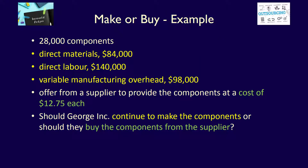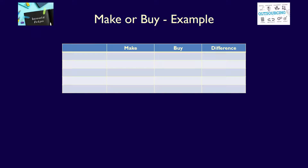We now have all the relevant information: 28,000 components, direct materials $84,000, direct labor $140,000, variable manufacturing overhead $98,000, and the supplier offering $12.75 per unit. We can move on to step 3 and compare the relevant revenues and costs to determine the difference. This is our quantitative analysis. We'll use a chart format, with column 2 as the make option, column 3 as the buy option, and column 4 as the difference between the two alternatives. Starting with direct materials of $84,000 — if we make the component, we incur $84,000 of costs; if we buy, we incur none. $84,000 minus zero equals $84,000, which is the difference.